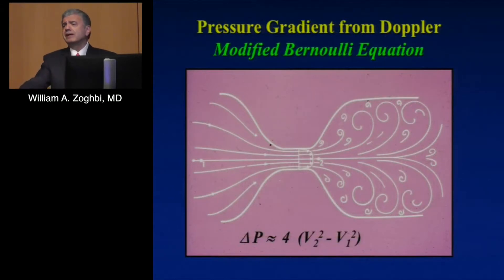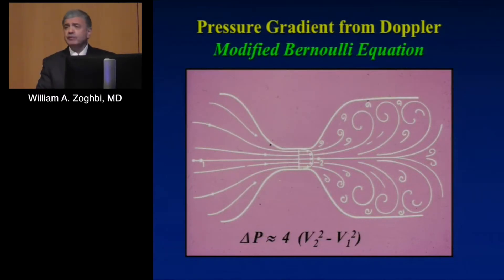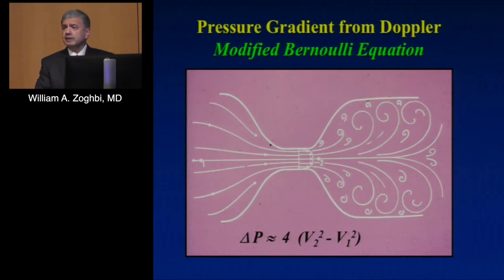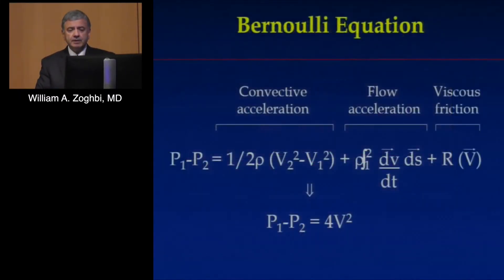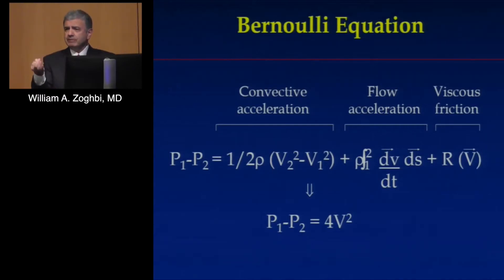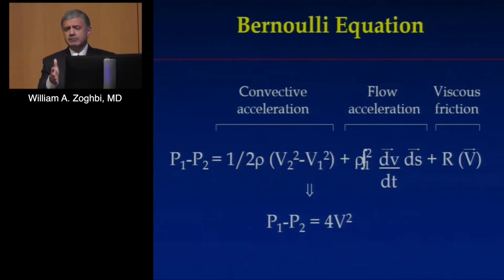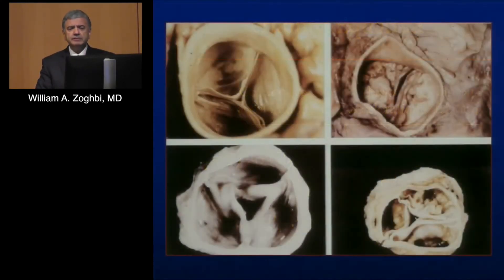We estimate pressure gradient using the modified Bernoulli equation, simplified to 4V². If the velocity across the aortic valve is 4 meters per second, it's 4 × 4² = 64 mmHg — the maximal pressure gradient. This simplification works because for discrete stenoses like mitral or aortic stenosis, flow acceleration and viscous friction are not significant issues.